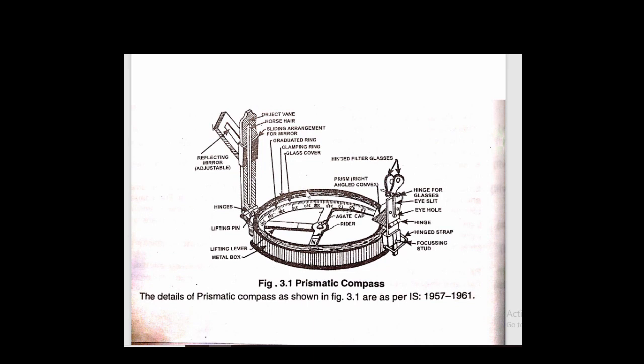First of all, this is a circular ring. Here is a reading note where we note the glass cover, clamping ring, graduated ring where the readings are noted. Here is a bottle box, lifting pin, sight where we can see the object, and a wire. There is a mirror reflecting. In the mirror, we adjust if we are not visible on the sight, then we adjust that.